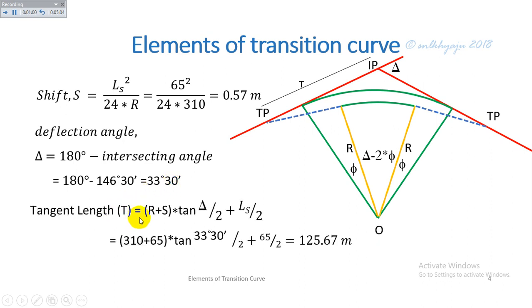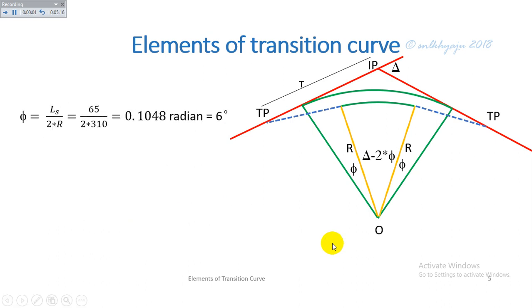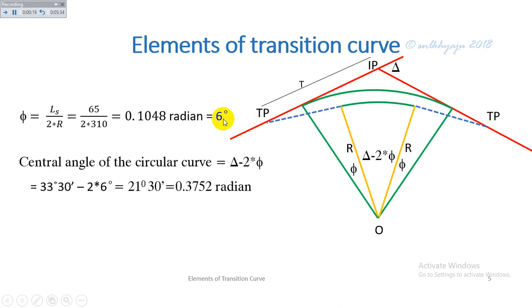The tangent length T = (R + S) tan(delta/2) + L_S / 2 is calculated as 125.67 meters. The angle phi made by the half length of the transition curve is given by L_S / 2R and is calculated as 0.1048 radians, which converts to 6 degrees. The central angle of the circular curve, delta minus 2 phi, is calculated as 0.3752 radians.